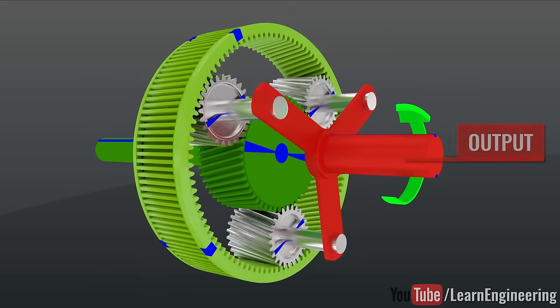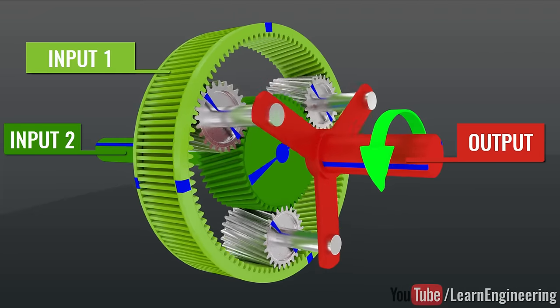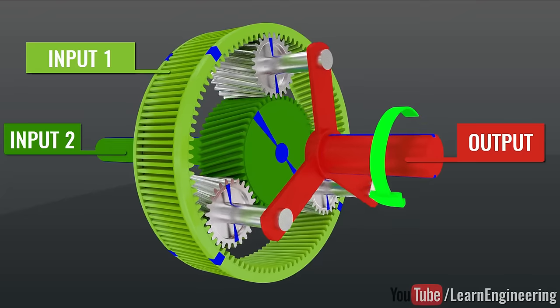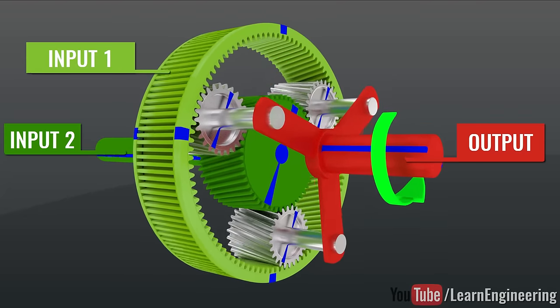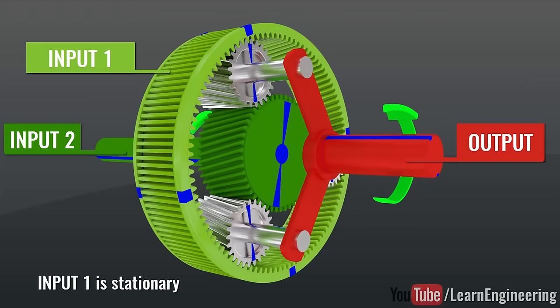You can see that a planetary gear set has two inputs and one output. The basic principle of automatic transmission is simple. Just vary these two input speeds and you will get different output speeds.